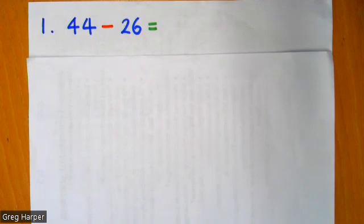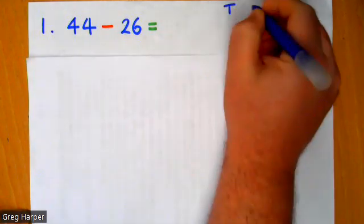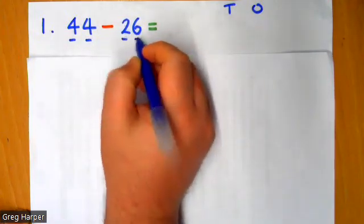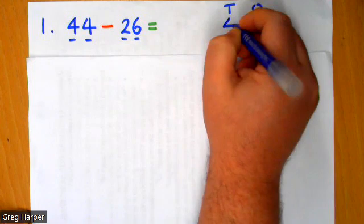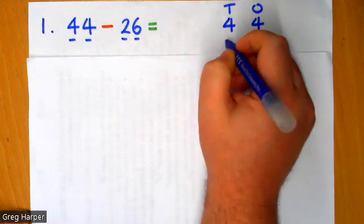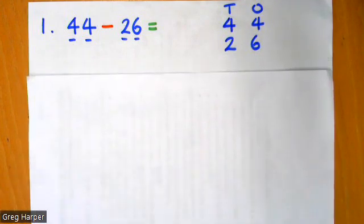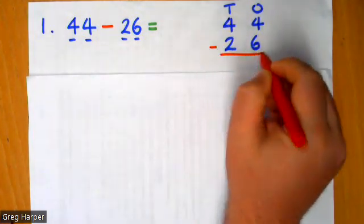So my first sum here is 44 minus 26. So as always, we're going to start with our column method. I'm going to put my T and O for tens and ones, because I know I've got two digit numbers. I'm going to put my 44 in and my 26 in. And then I'm going to add my operation, which is subtraction, and my answer box underneath.